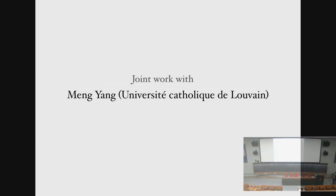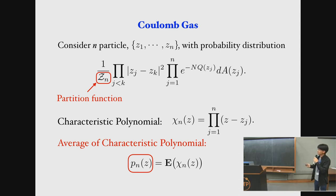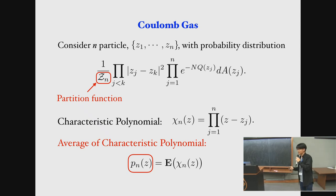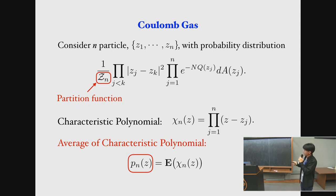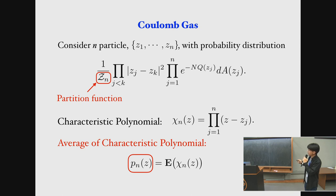This is an ongoing project with Menyang. Let me first describe the model. This Coulomb gas — the difference from what Professor Guionet taught us — is that it's on the full complex plane. So they repel each other with beta equal to one or two depending on the convention, and with some confining potential Q. This is the probability distribution for N point particles on the complex plane.